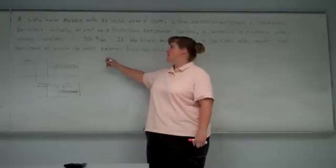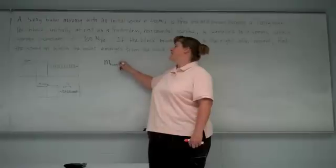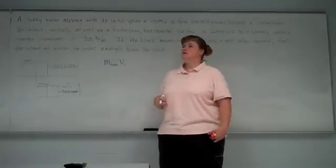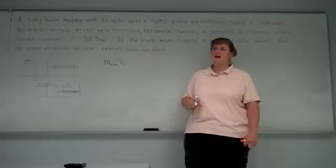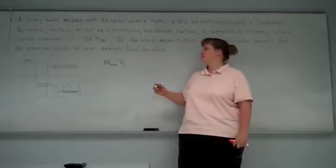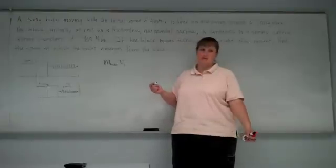So initially, right before the collision happens, the bullet has momentum. Its momentum is its mass times its speed. We know its mass. We know its speed. The block has no momentum initially because it's not moving initially.